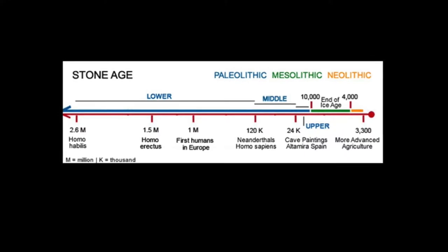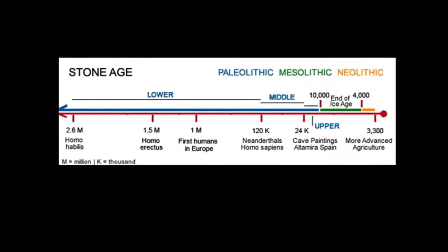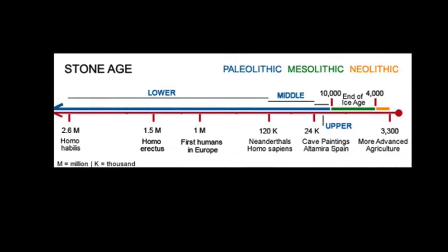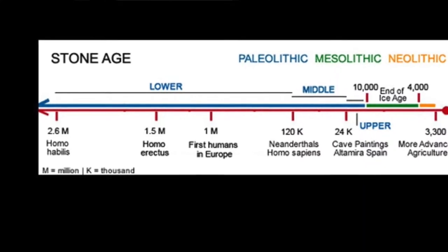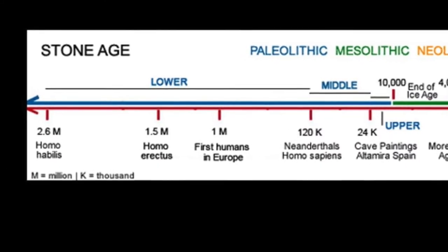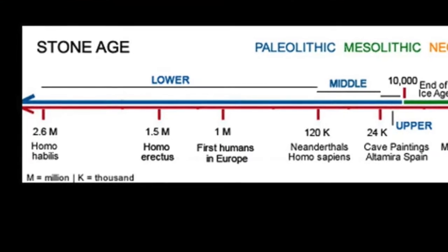The earliest phase of archaeological materials that we recognize is what's called the Paleolithic, the Old Stone Age. It's followed by the Mesolithic, the Middle Stone Age, and the Neolithic, the New Stone Age. The Paleolithic is also subdivided into three parts: the Lower, Middle, and Upper Paleolithic. These are technologically distinct and, to some extent, distinct in the species associated with the technologies of these periods.